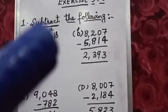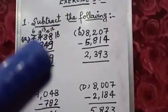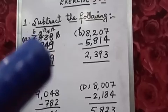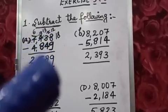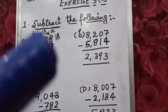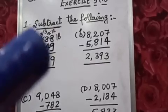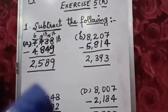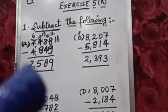Now 4 will become 3 and we will take borrow from 7. So 3 will become 13. 13 minus 8 is 5, and 7 will become 6. So 6 minus 4, we can minus 4 from 6 and we will get 2.